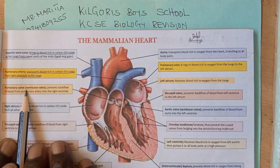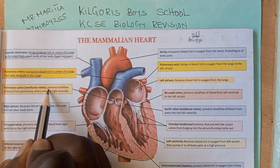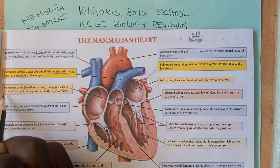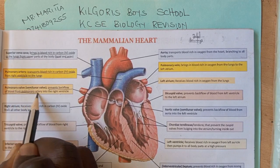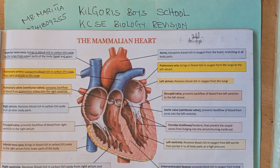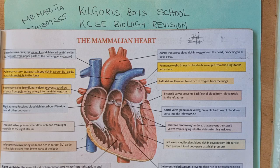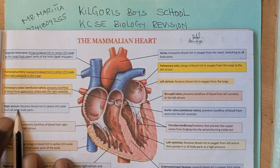We have the semilunar valve. The semilunar valve prevents backflow of blood from the pulmonary artery into the right ventricle, preventing blood from flowing back.